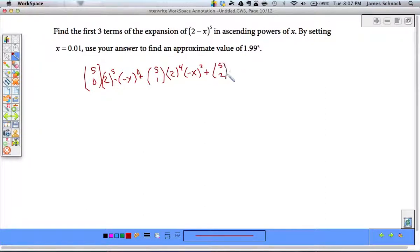Plus, 5 choose 2, 2 cubed, times negative x. That's negative to the first, which would be squared.